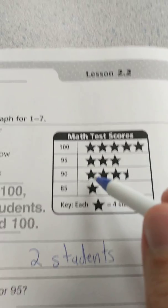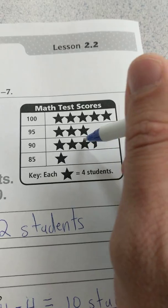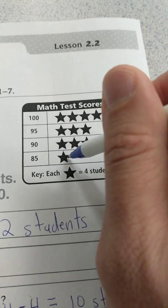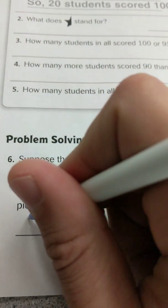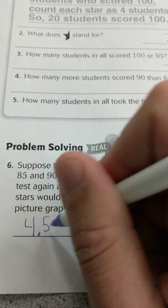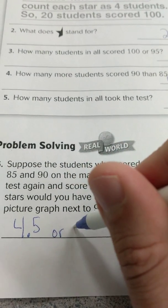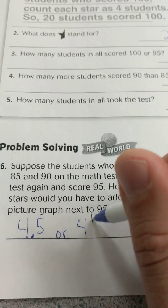Well, we literally, because it says how many stars, not how many students, we literally just count the stars. 1, 2, 3, 3½, then 4½, so 4½ stars. Or I could say 4.5 stars. Or 4½ like this.